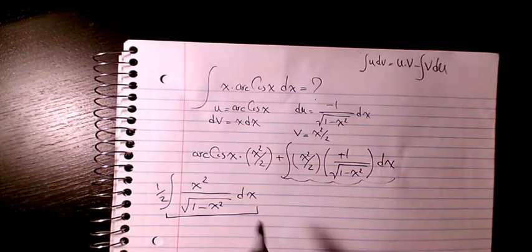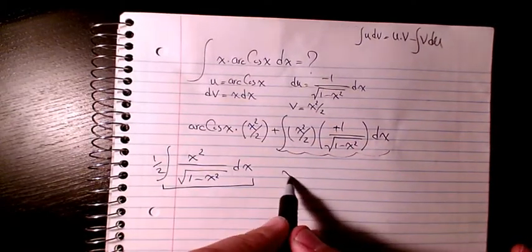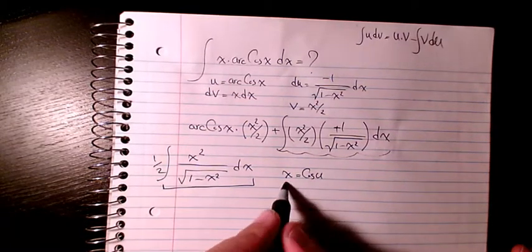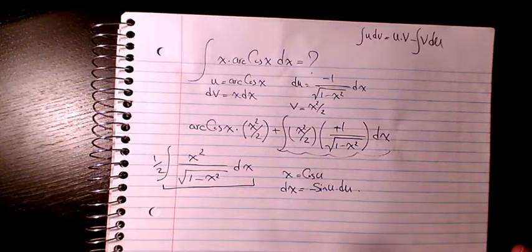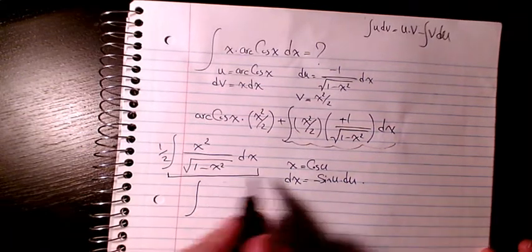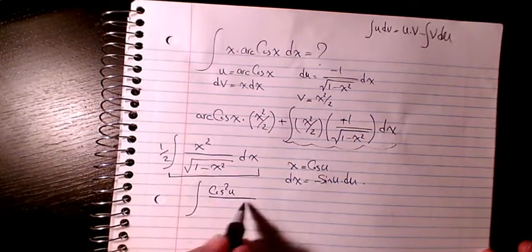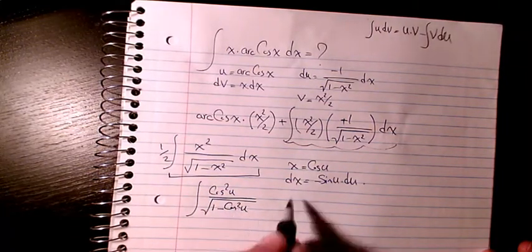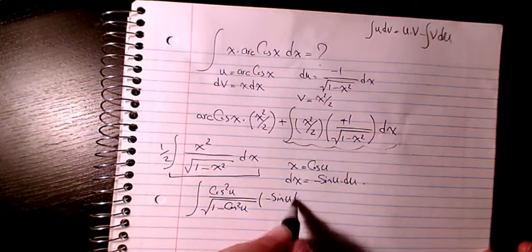I'm going to use integration by substitution. I'll consider x as cos(u), so dx will be negative sin(u) du. The integral changes: instead of x squared I write cos²(u), and in the denominator I have the square root of (1 minus cos²(u)), and instead of dx I have negative sin(u) du.